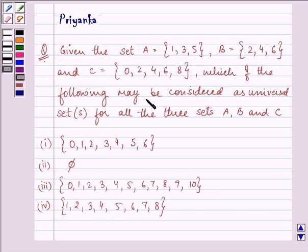which of the following may be considered as universal sets for all the three sets A, B, C?